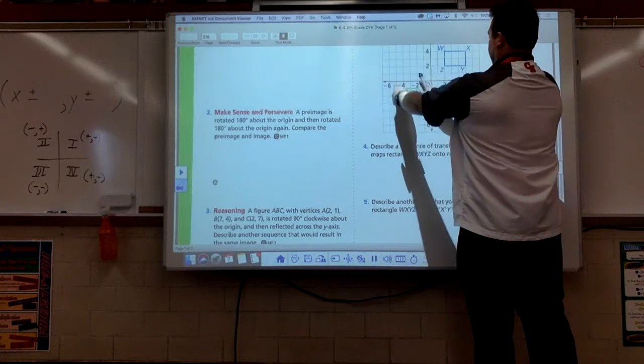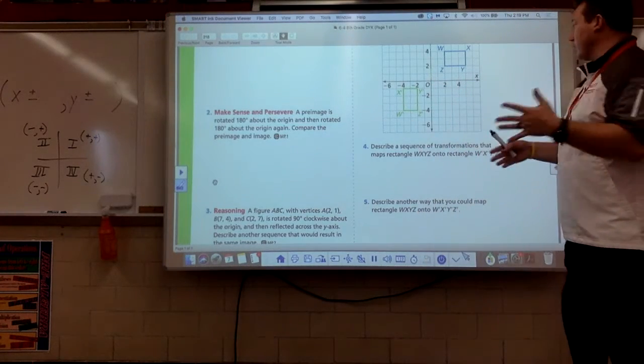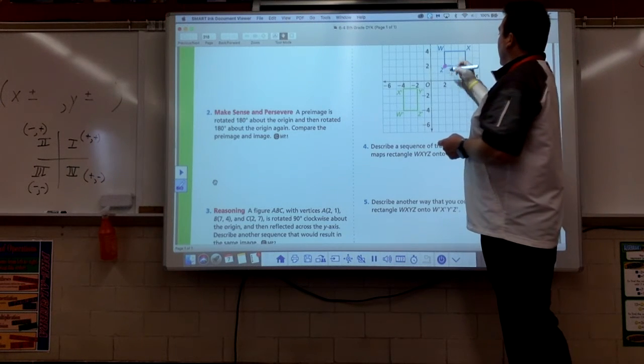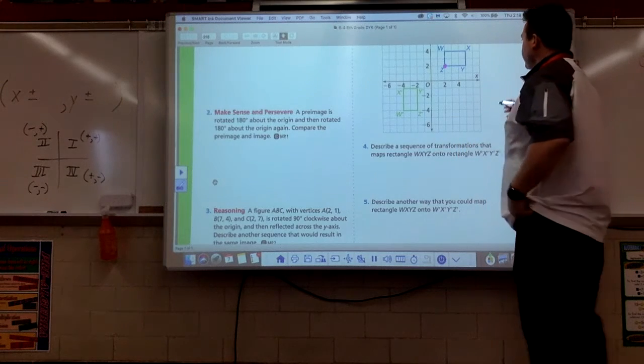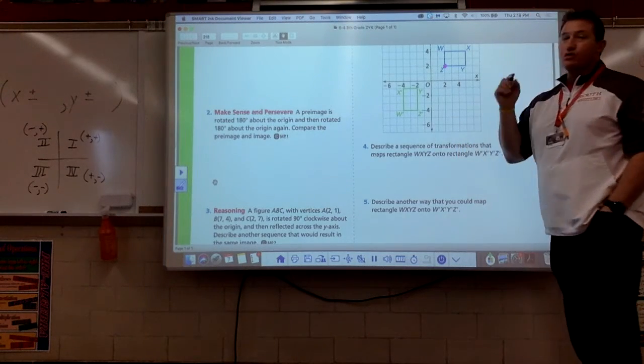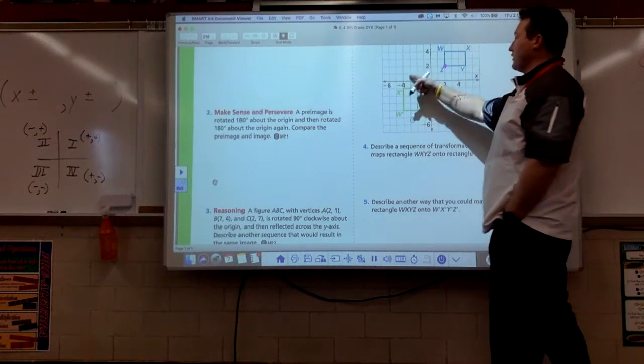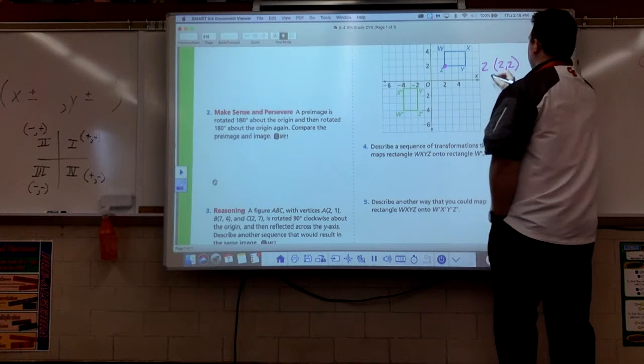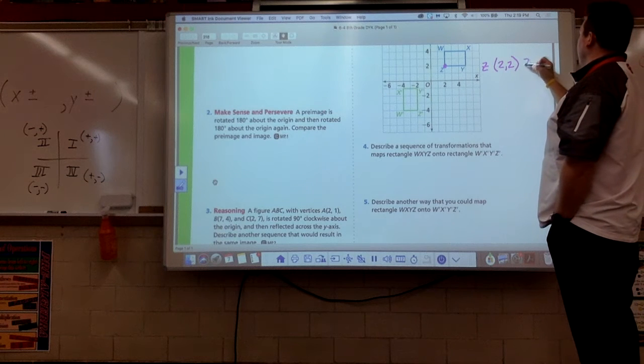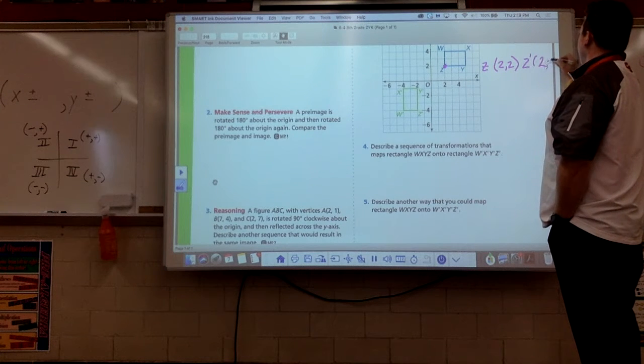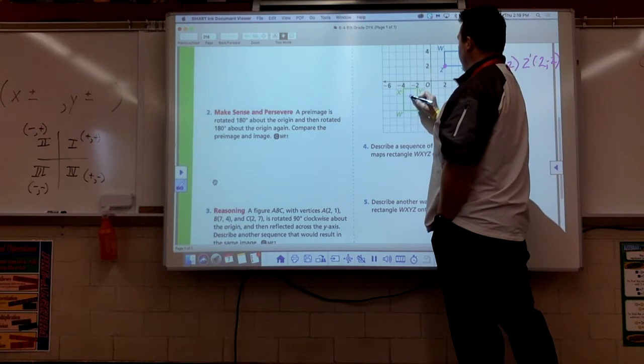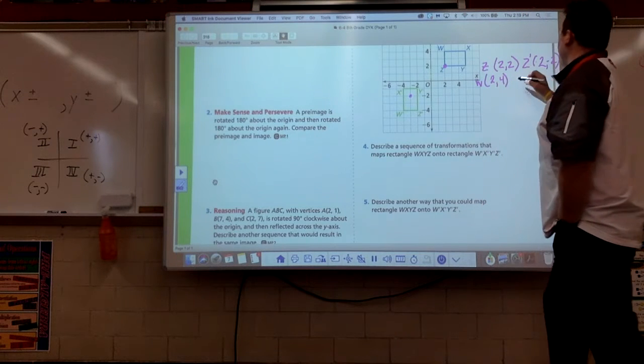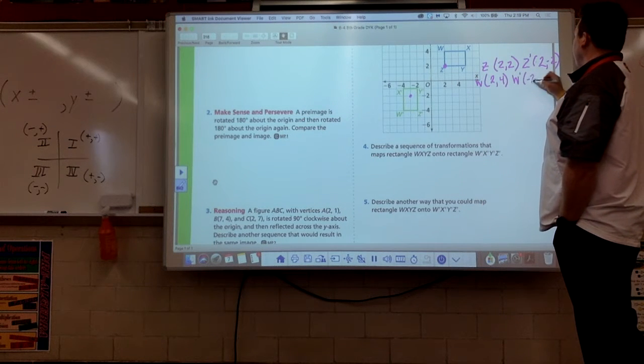This means we're either going to translate it or rotate it. Reflection is right out. If we translate this, is there any? No, that's not going to work for us. So I think we've got to have a rotation in here. We're moving two quadrants away. I think we need to rotate 180 degrees. Remember, each quadrant is 90 degrees. So Z is right here at 2, 2.